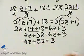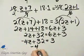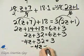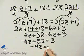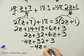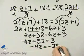And then if I subtract 32 from both sides, I have negative 4z is equal to 3 minus 32, and that is negative 29.